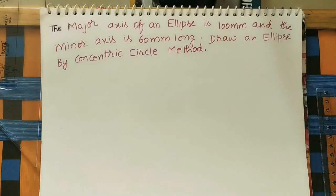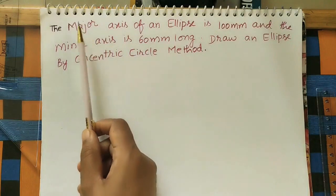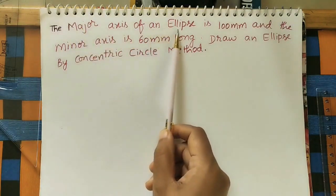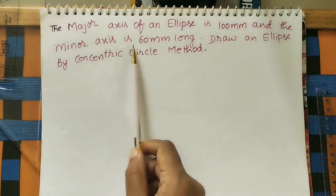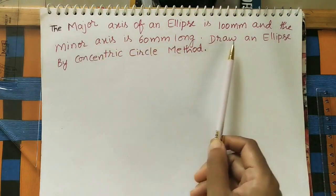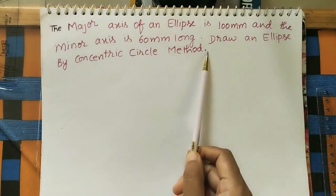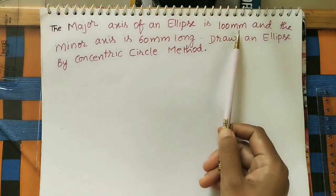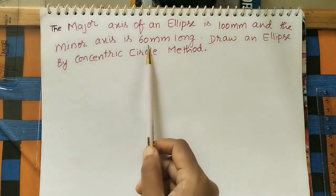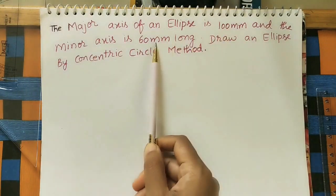Hello friends, today we will discuss how to draw an ellipse using the concentric circle method. The given data: the major axis of the ellipse is 100 mm and the minor axis is 60 mm. Major axis length is 100 mm or 10 centimeters, and the minor axis length is 60 mm, that is 6 centimeters.